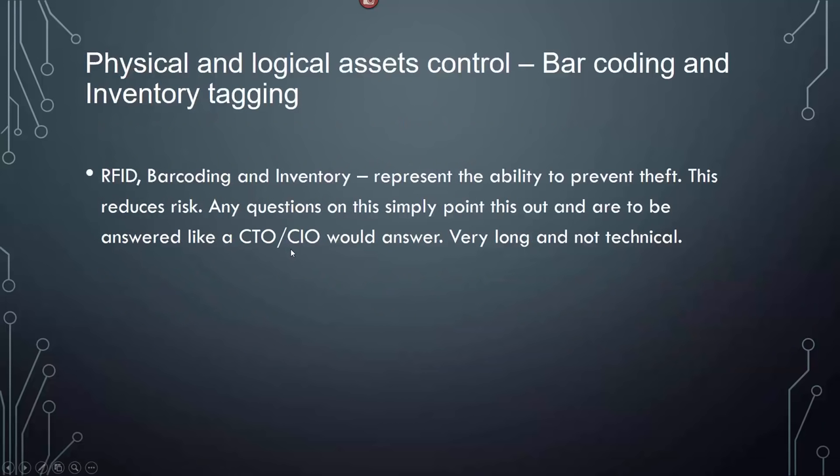Physical and logical asset control — barcoding and inventory tagging with RFID represents the ability to prevent theft, which reduces risk. Any questions on this should be answered like a CTO or CIO would answer — high level, not technical. That's how you answer all of those questions.